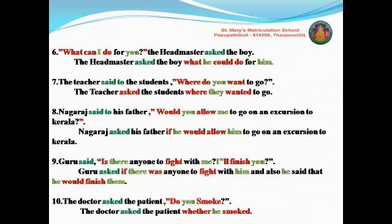Eighth sentence: 'Nagraj said to his father, would you allow me to go on an expedition to Kerala?' This is also an interrogative type. Note carefully: 'would' is an auxiliary verb, so a question that starts with an auxiliary verb is a yes/no type question. In interrogative, there are two types: WH or auxiliary verb — yes/no type question. 'Would' is the auxiliary verb, so it is a yes/no type question. A question starting with an auxiliary verb is called a yes/no type question.